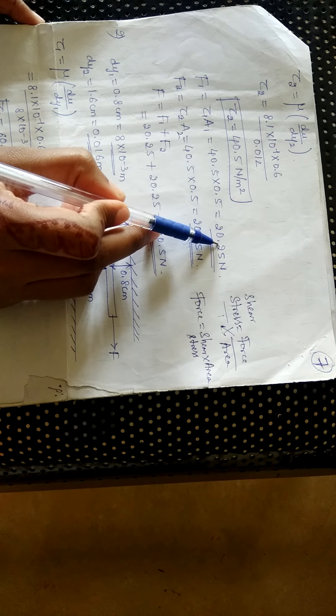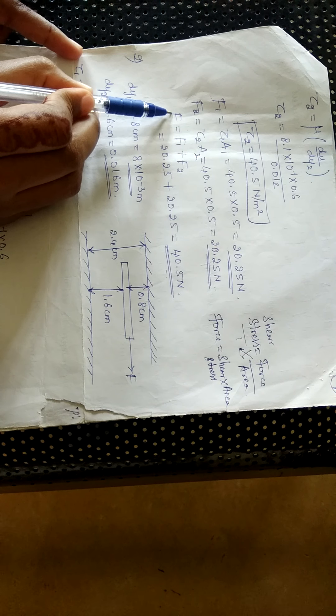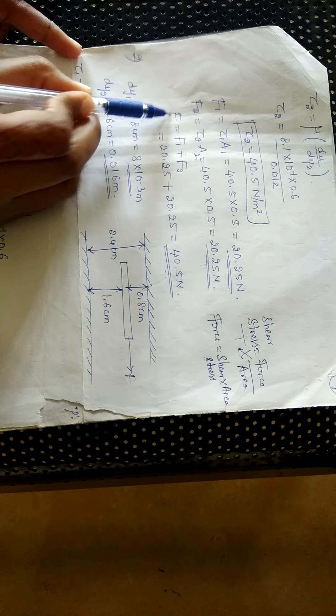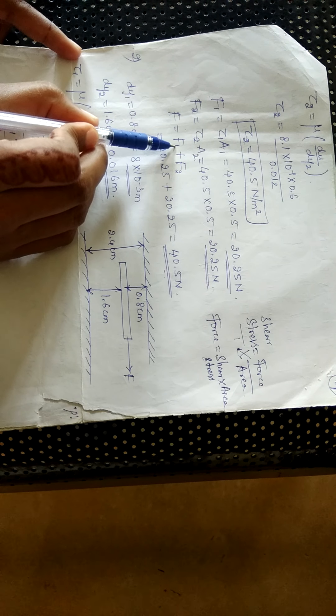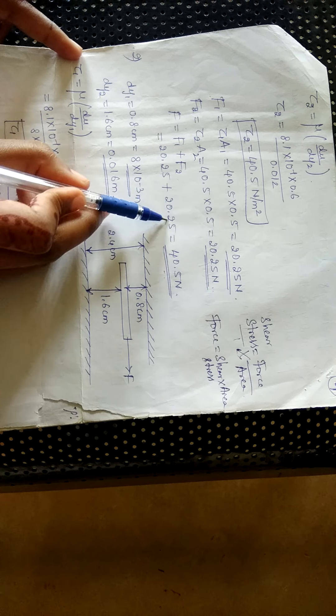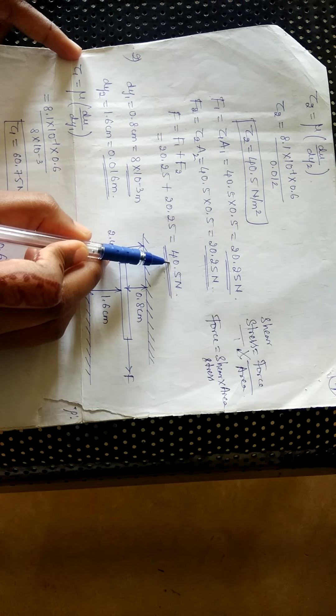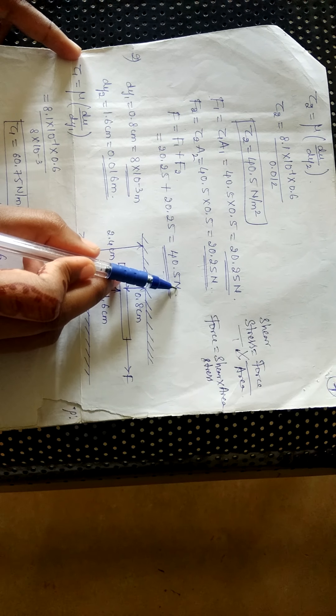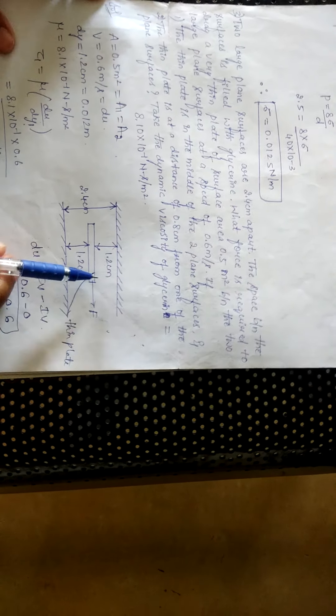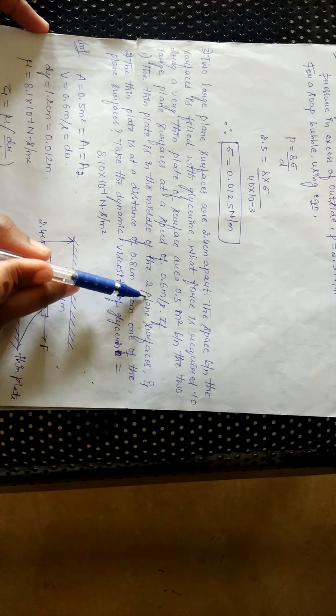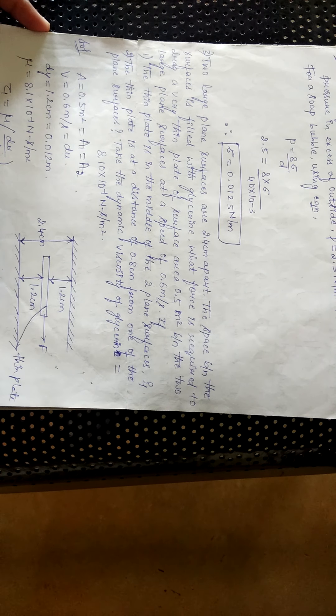Once we have these two values, we find the total force required to drag the plate. Let F be the total force, given by F = F₁ + F₂ = 20.25 + 20.25 = 40.5 N. This 40.5 N is the force required to drag the thin plate in Case 1, when the plate is in the middle of the two plane surfaces. This completes Case 1.